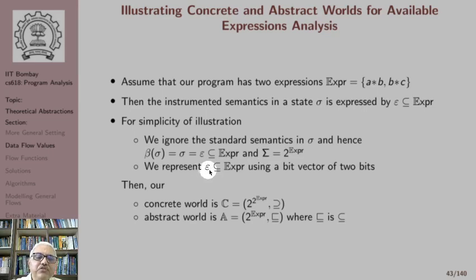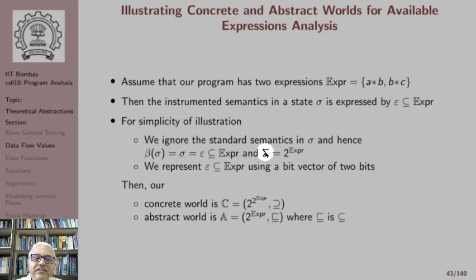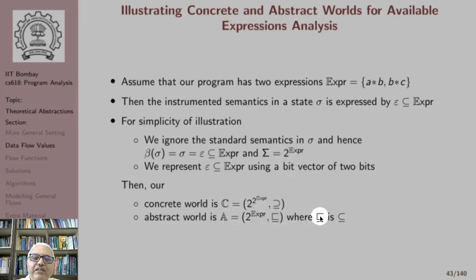We represent the instrumented semantics using a bit vector of 2 bits. The concrete world is 2 raised to 2 raised to expr with a superset relation, and the abstract world is 2 raised to expr with a weaker-than relation, where weaker-than is the subset relation.